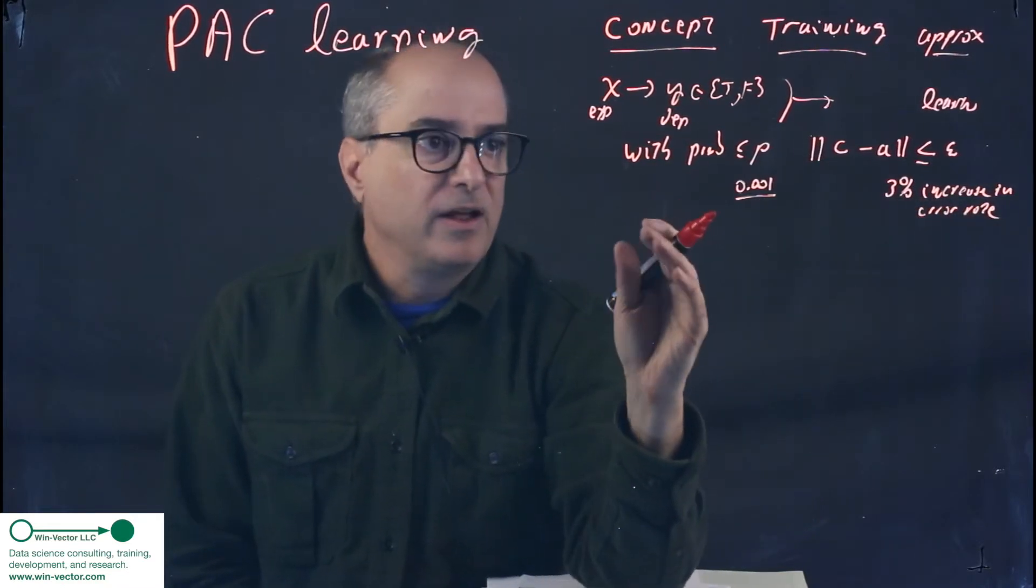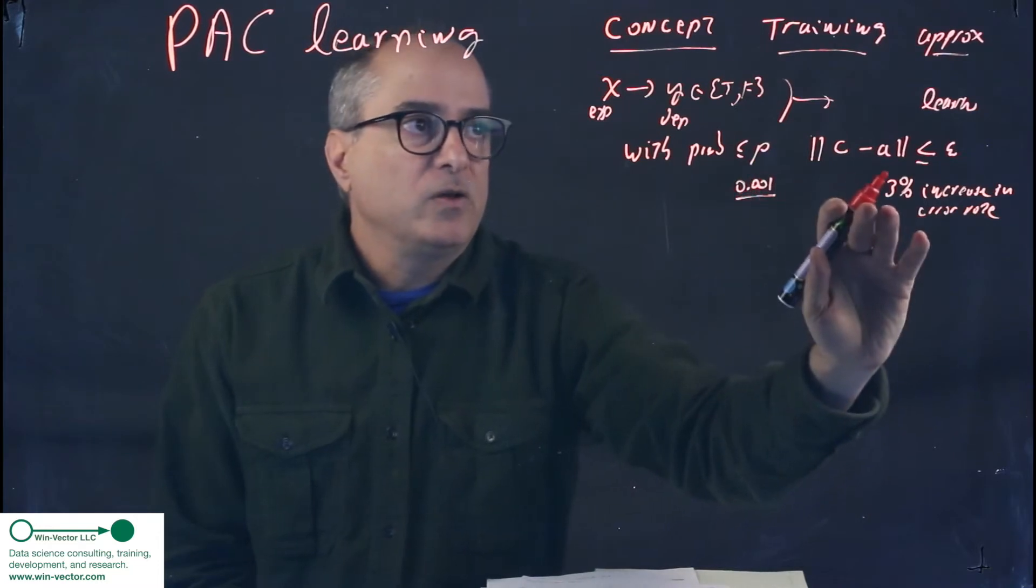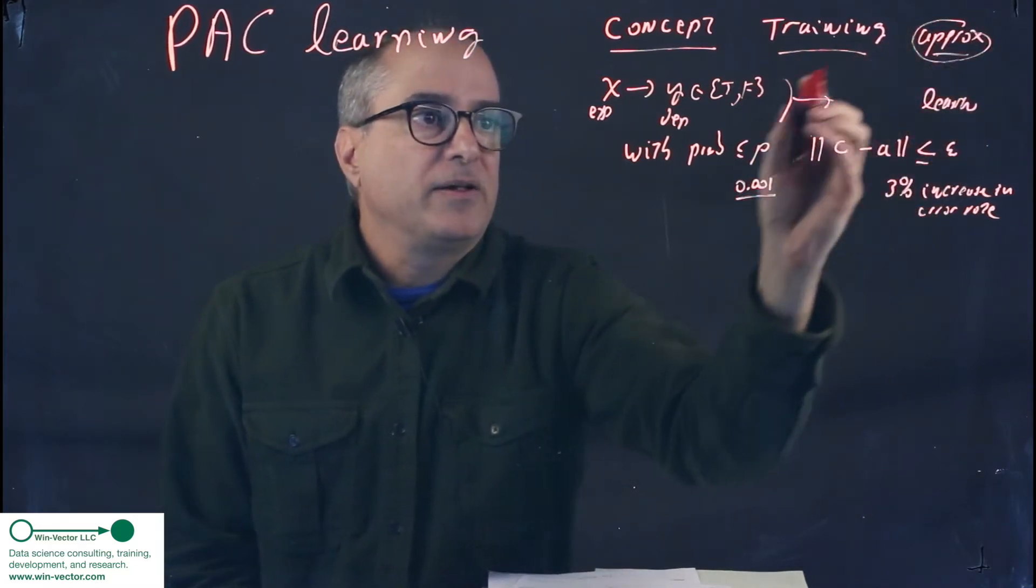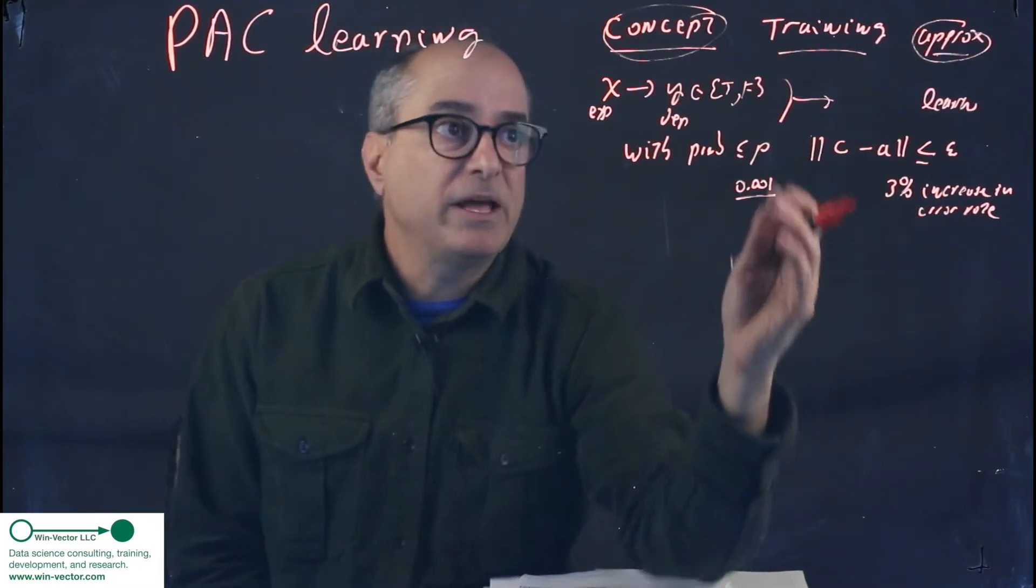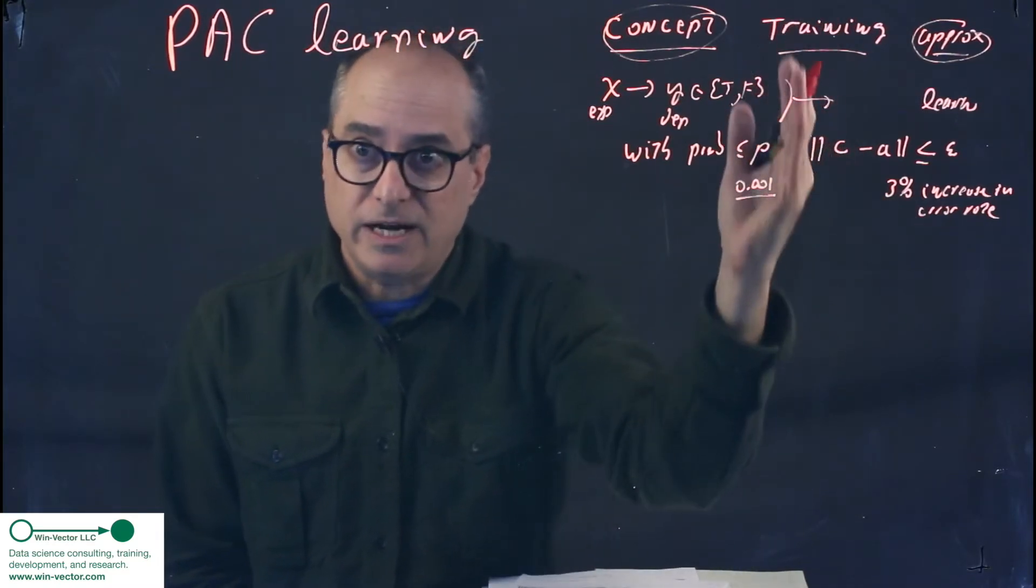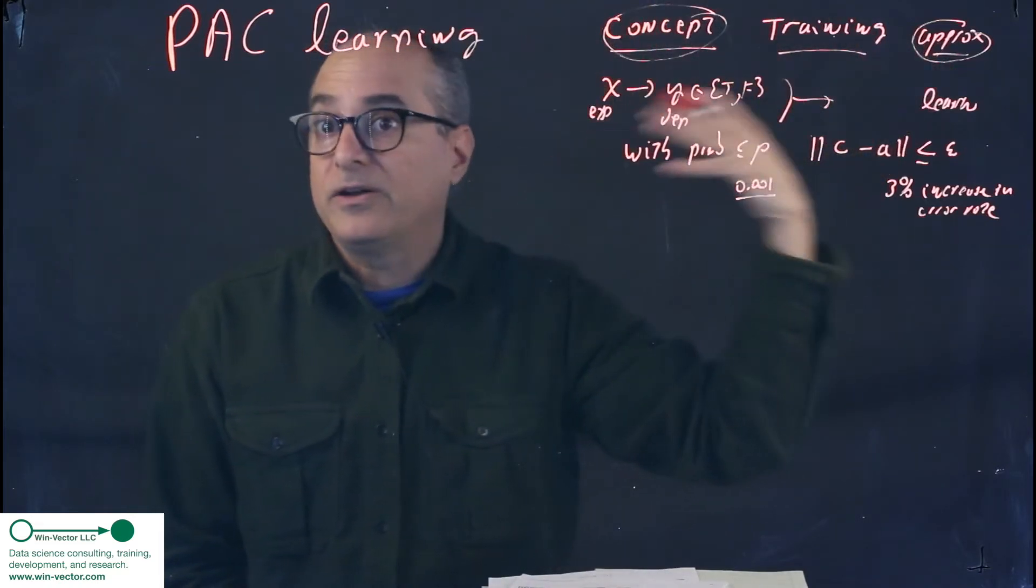So a PAC-type statement says, with a probability no more than 1 in 1,000, your approximation agrees with the concept except for in all but 3% of the positions. So it may have agreed with the concept everywhere on your training data, but that's not yet evidence it'll agree with the concept everywhere on all data in the world.